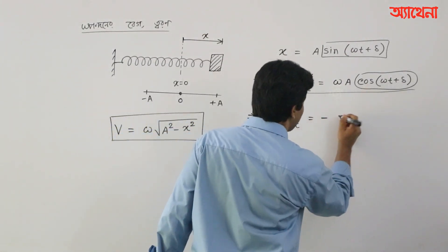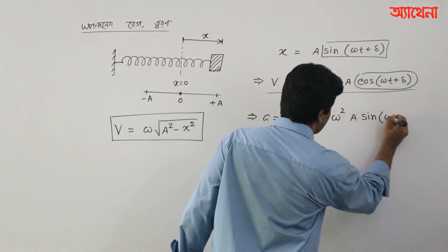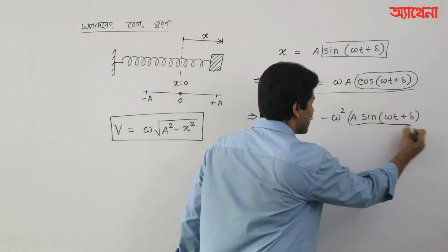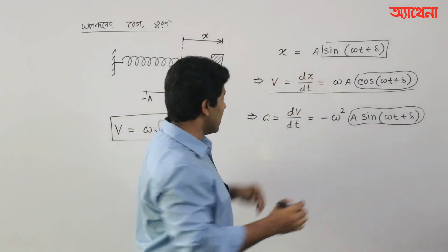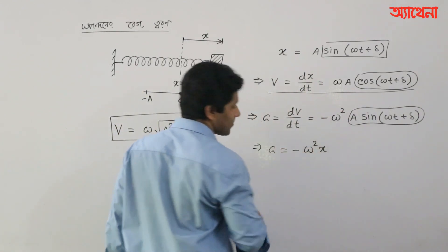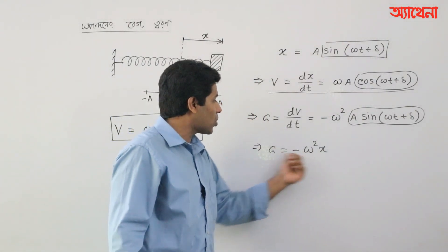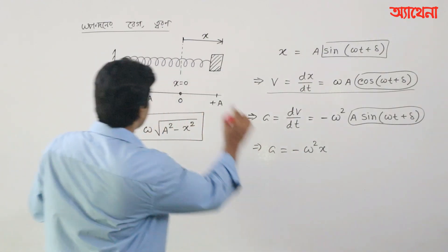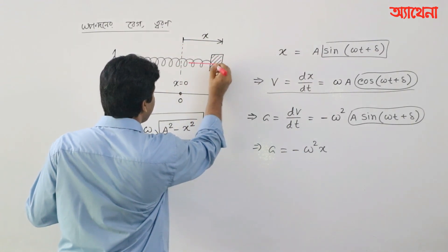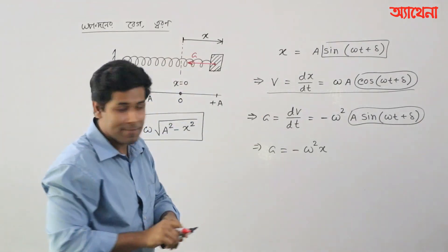As you differentiate, cos becomes minus omega, then omega squared a times sin(omega t + delta). So you can write acceleration as minus omega squared x. So what do you mean? When I say a is a-squared, the acceleration is part of a, and the key thing about acceleration is that it equals minus omega squared x.